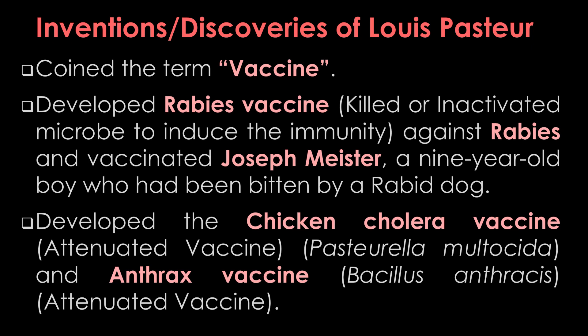The term vaccine was coined by Louis Pasteur. He developed the rabies vaccine, a killed or inactivated type of vaccine which induces immunity against rabies, produced from the brains and spinal cord of rabbits. On July 6, 1885, Pasteur vaccinated a nine-year-old boy named Joseph Meister, who had been bitten by a rabid dog. He also developed vaccines for chicken cholera and anthrax. The chicken cholera vaccine is an attenuated vaccine; chicken cholera is caused by the bacterium Pasteurella multocida, resulting in high economic loss in poultry.